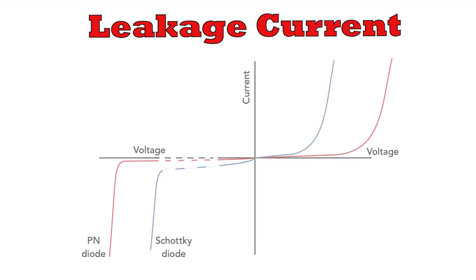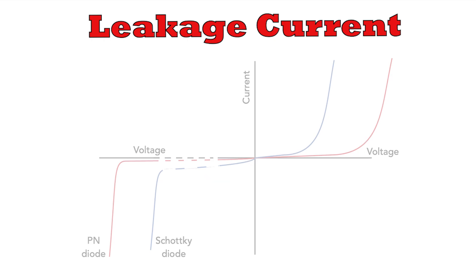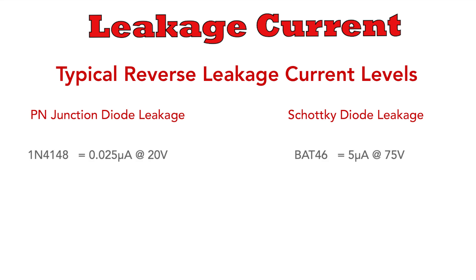Their biggest drawback is that they have a relatively low maximum reverse voltage breakdown — around 100 volts is the maximum you can get for a silicon Schottky diode. Silicon carbide Schottky diodes can improve on this, but that's a story for another video. It's also worth remembering that the leakage current of silicon Schottky diodes is much higher than that of standard silicon PN junction diodes. Leakage current could typically be measured in nanoamps for a PN junction diode and possibly microamps or even milliamps for a Schottky diode — so it's worth keeping in mind.